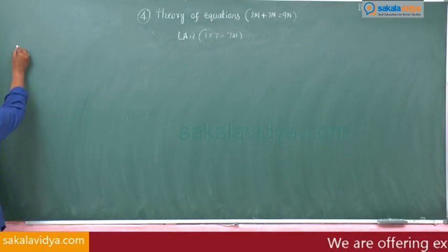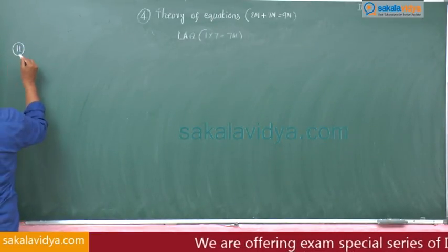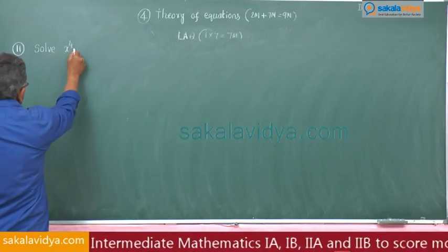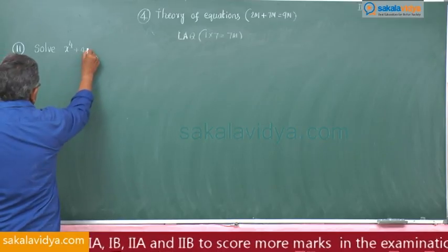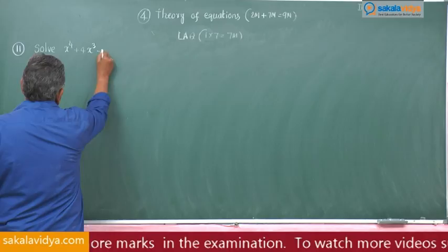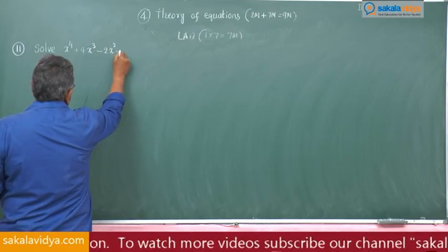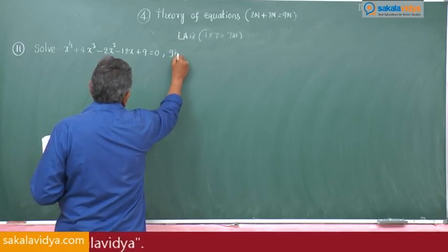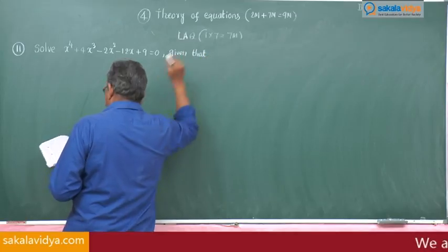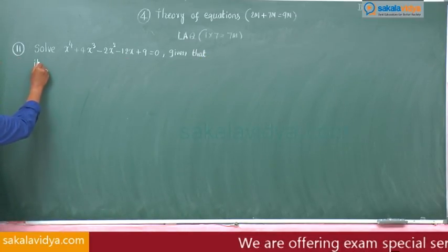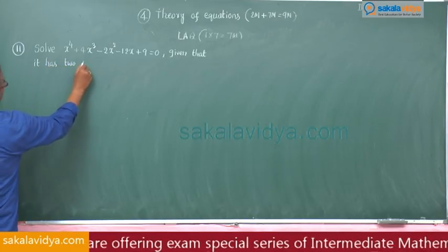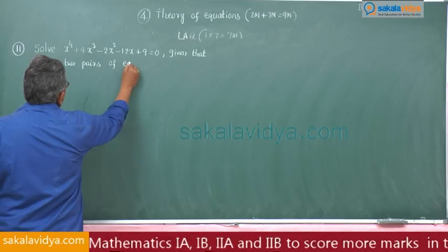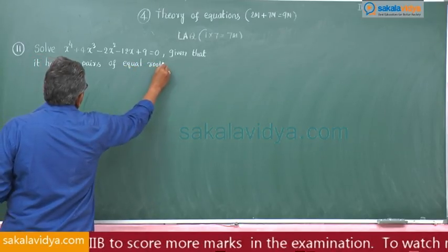Eleventh problem: solve x to the power of 4 plus 4x cubed minus 2x squared minus 12x plus 9 is equal to 0, given that it has two pairs of equal roots.